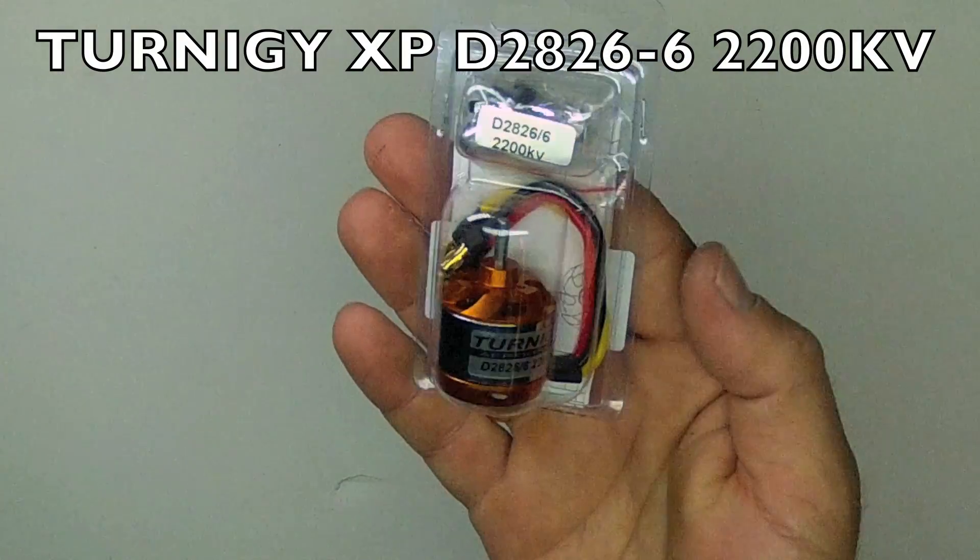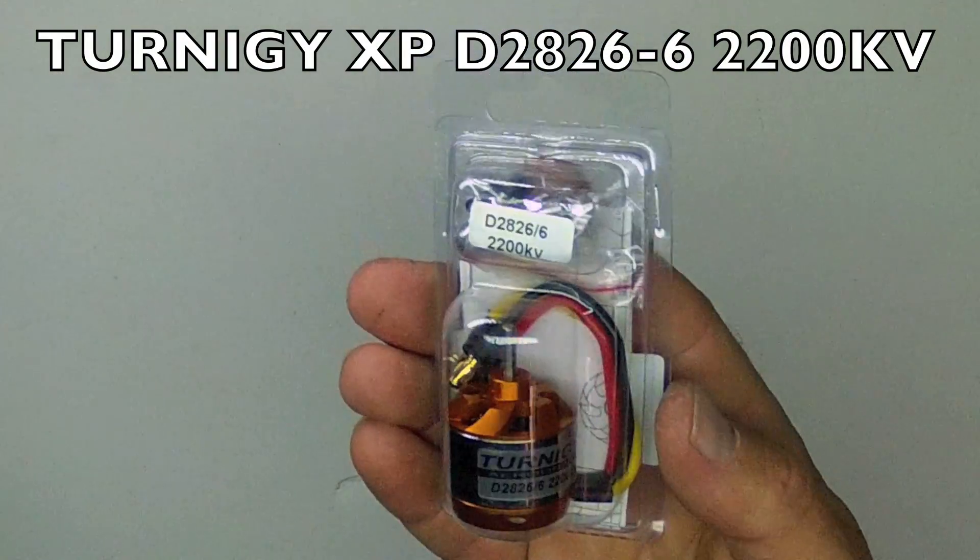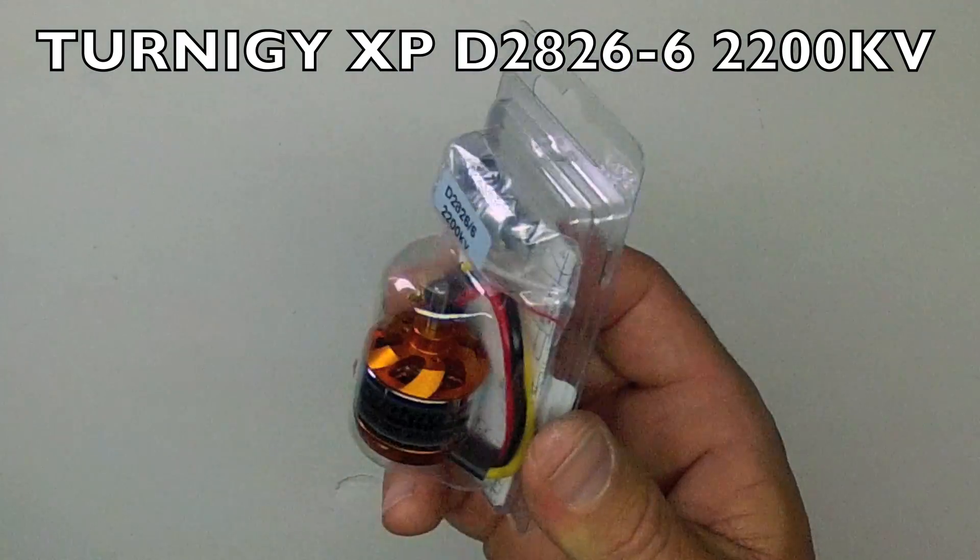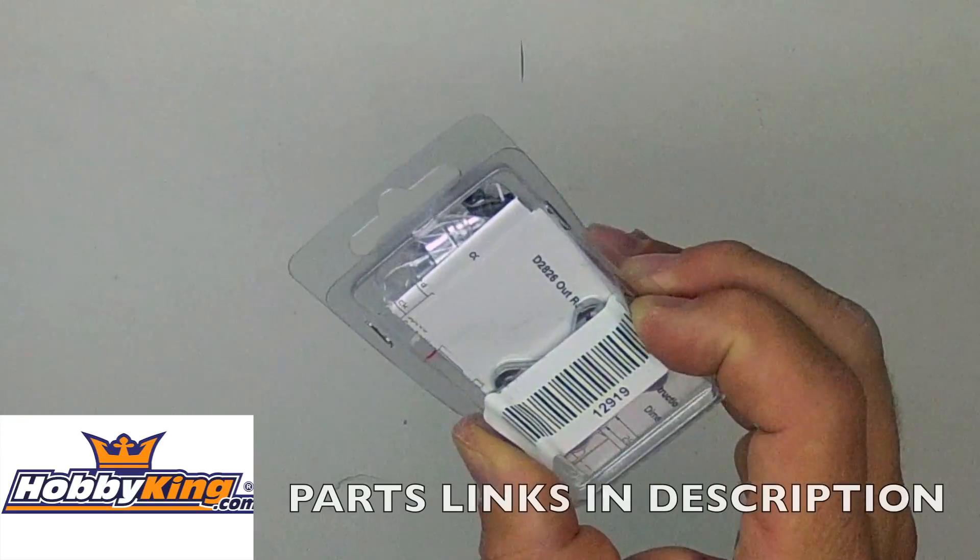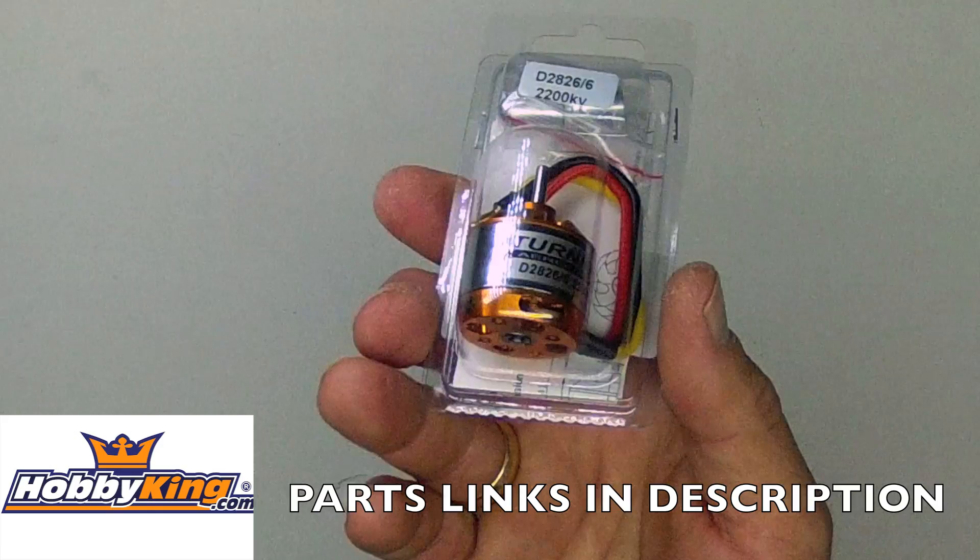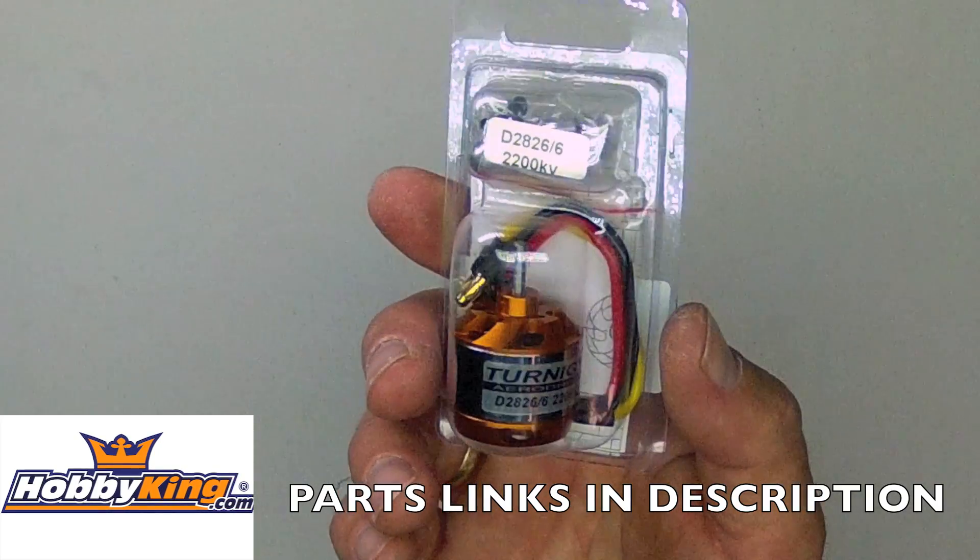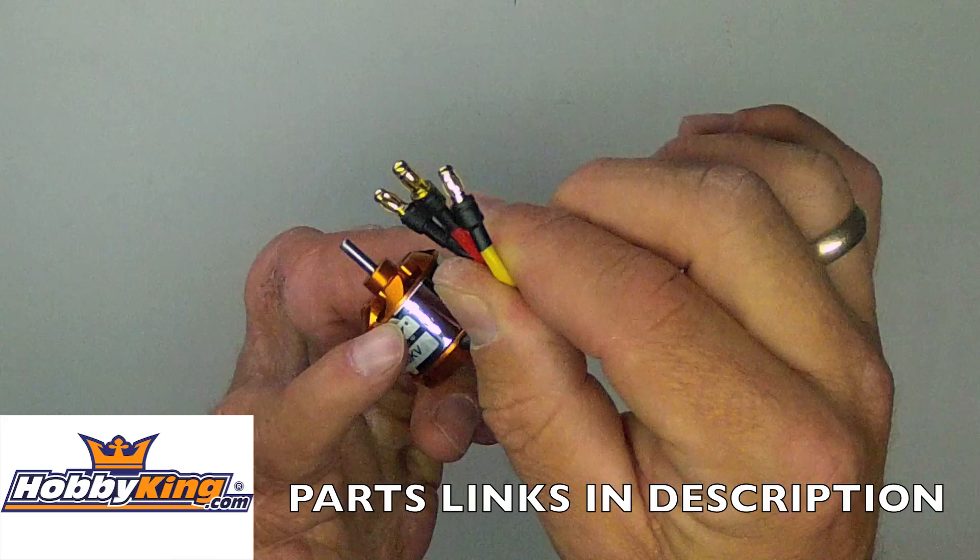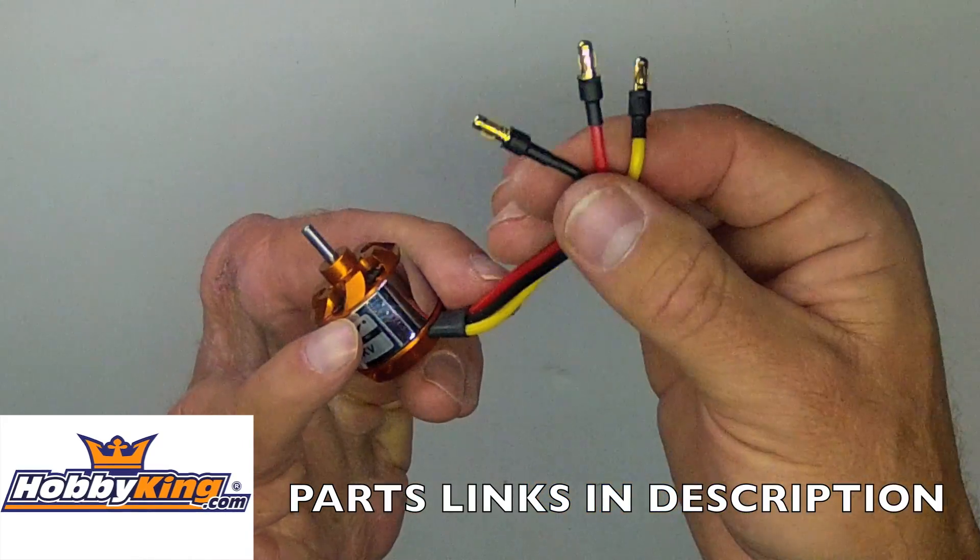This is the Turnigy XP D28-26 6-turn 2200kV motor. This is a small, compact, high kV motor, which is great for small props when those are needed, such as mid-motor pusher configurations. This motor is only $9. It comes with the 3.5mm bullet connectors already attached.